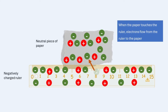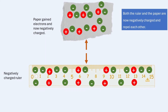As soon as the paper touches the ruler, electrons move from the ruler to the paper to neutralize the positive charge on the nearest side. The paper now has a net negative charge — just like the ruler. Since like charges repel each other, the paper is repelled by the ruler, which is why the paper falls off after a little while. Two oppositely charged objects attract each other due to an electrostatic force. Electrostatic attraction is a non-contact force because objects do not have to be touching to experience it. When two objects with the same charge are brought together, they repel each other instead.